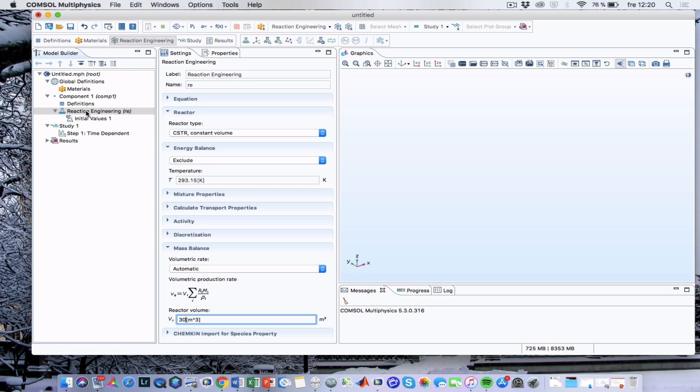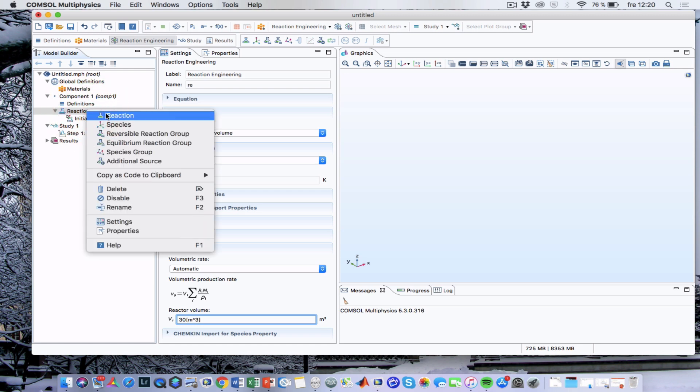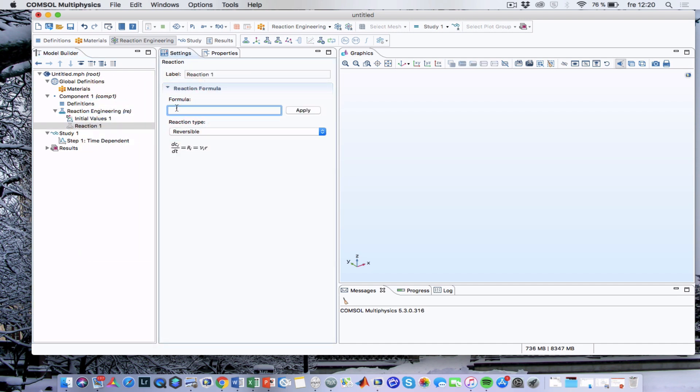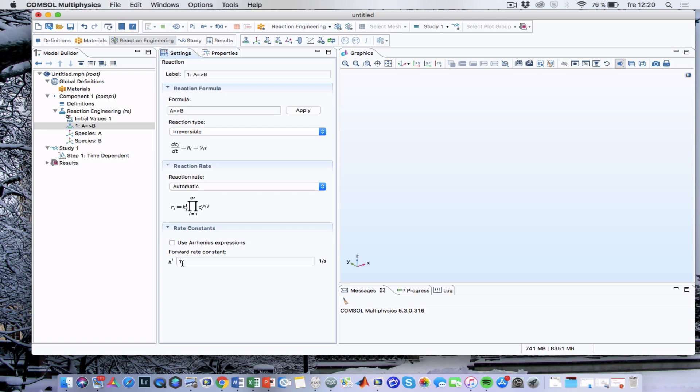We should now right-click on reaction engineering to define the reactions. And I will define that A reacts to B in an irreversible reaction. And we can now enter the rate constant, which is 0.8.